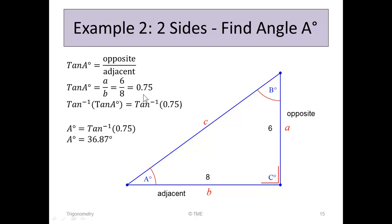6 over 8 is 0.75. When you're told that tan A equals something, you can find A by taking the inverse tan of both sides. Inverse tan of tan cancels out, leaving A equals inverse tan of 0.75. On a calculator, typing in 0.75 and pressing inverse tan gives the angle 36.87. So 36.87 is angle A, found simply by knowing two sides and that it's a right-angled triangle.